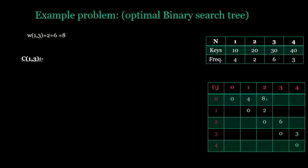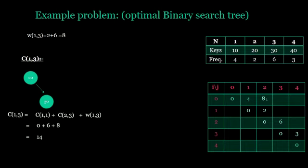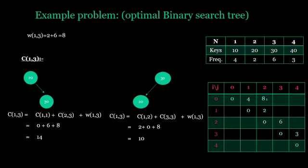Weight of 1,3 is 8. When the root node is 2, the cost is calculated using the formula and it is 14. And when the root node is 3, the cost is calculated using the formula and it is 10. Among these, 10 is the minimum and it is filled in the table.